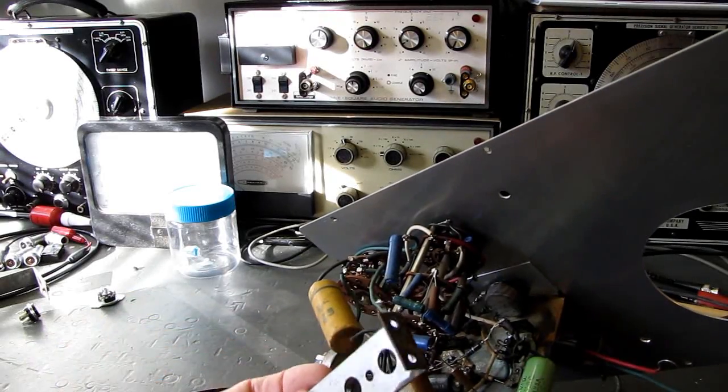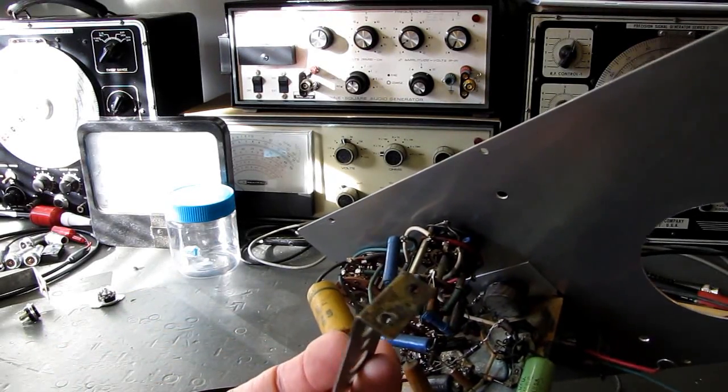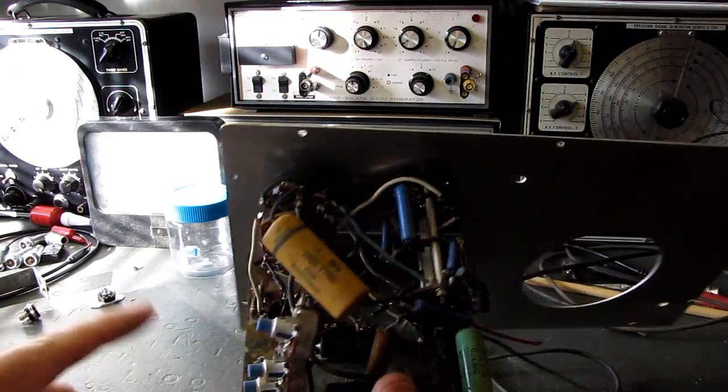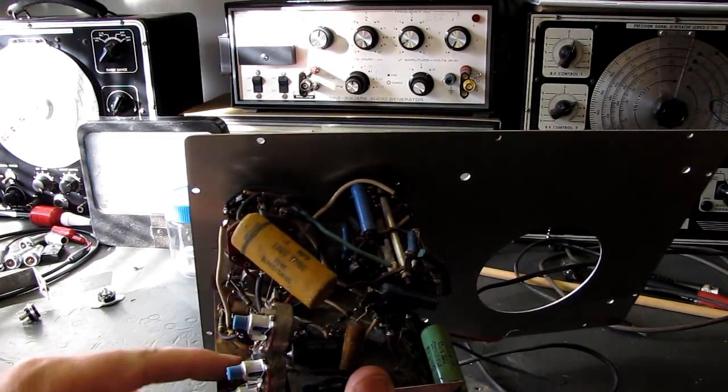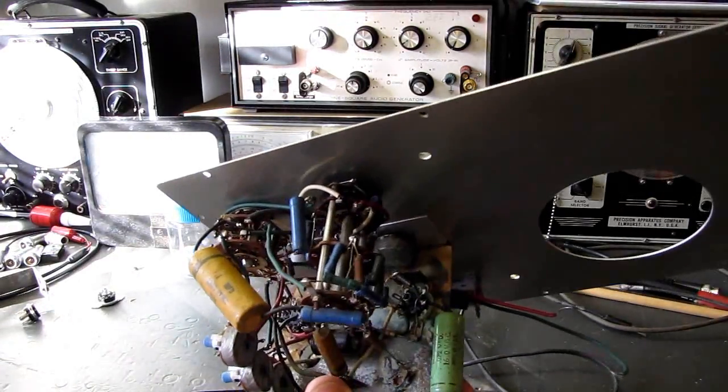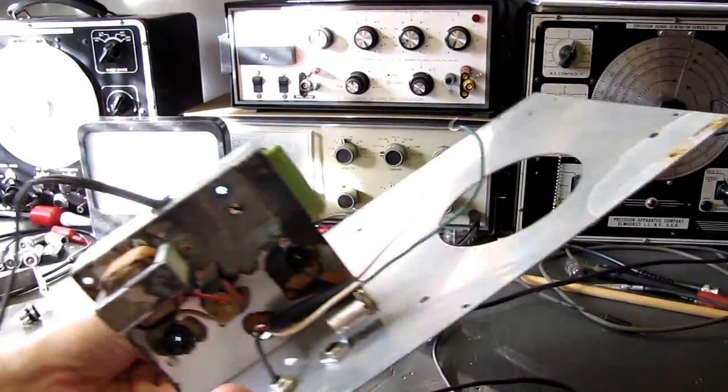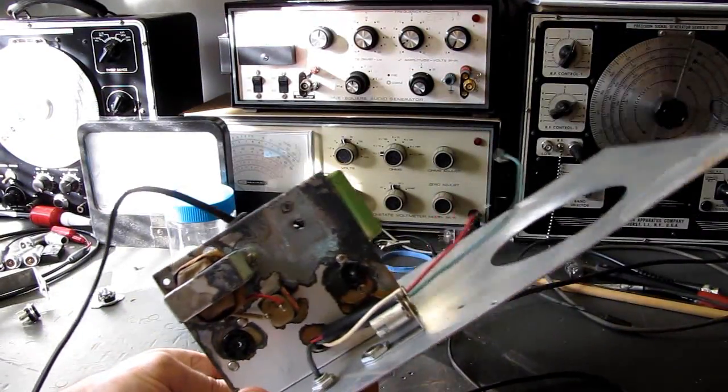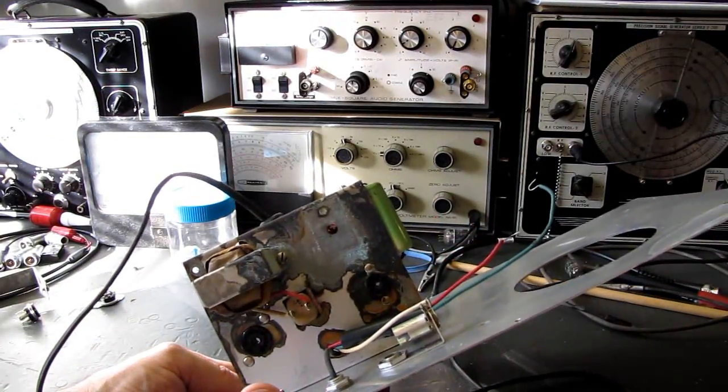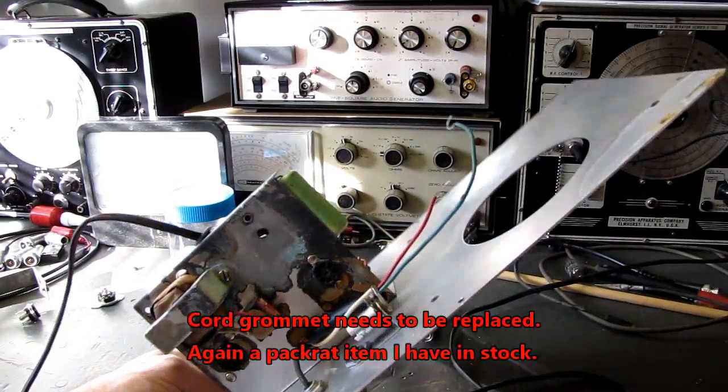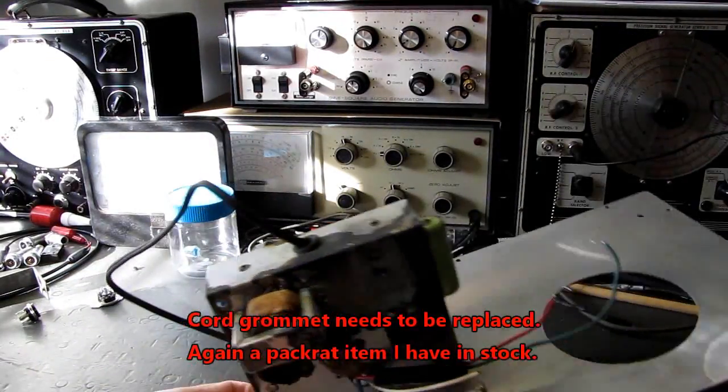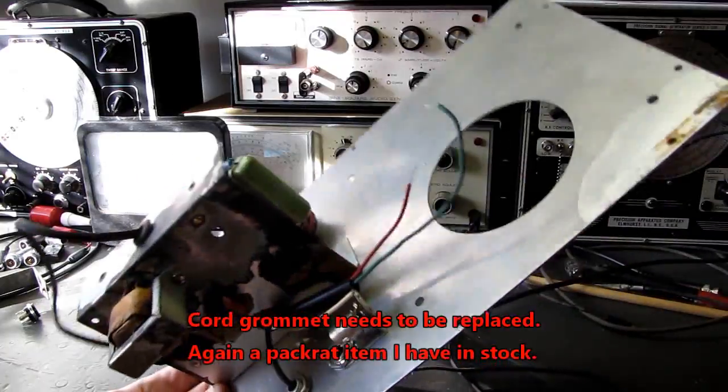This is the bracket that holds the calibration potentiometers. We'll clean that up. We're going to strip the chassis, strip everything off of it, sand it down, and I'm going to try zinc plating the chassis to clean it up. I've seen a couple people do that on YouTube and it seems to come out pretty good.